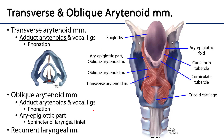The transverse and oblique arytenoid muscles are named as a group because they sit atop one another. The transverse muscle fibers run transversely and the oblique muscle fibers run obliquely; they attach arytenoid cartilage to arytenoid cartilage. The transverse arytenoid muscles adduct the arytenoid cartilages and thus also the vocal ligaments, closing the rima glottidis — the position for phonation. The oblique arytenoid muscles also do this, but they also have an aryepiglottic part within the aryepiglottic fold, which helps serve as a sphincter for the laryngeal inlet. Both muscles are innervated by the recurrent laryngeal nerves.